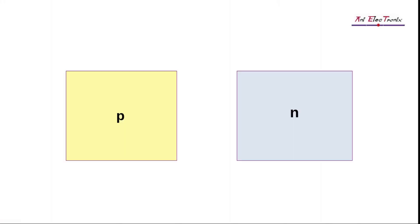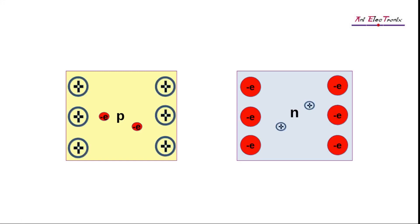As we saw in our previous video, a P-type semiconductor has a majority carrier of holes, while an N-type semiconductor has a majority carrier of electrons.